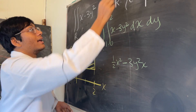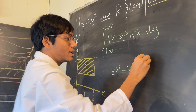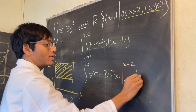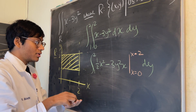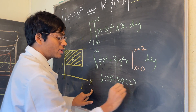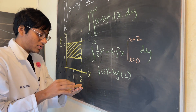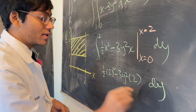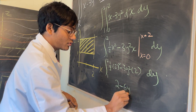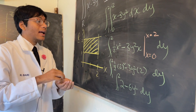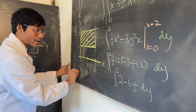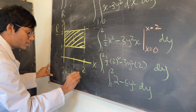Evaluate from x equals 0 to x equals 2. Plugging in x equals 2: we get half of 2 squared minus 3y squared times 2, which is 2 minus 6y squared. Plugging in x equals 0 gives zero, so we don't need to worry about it. We're left with the outer integral from y equals 1 to 2 of 2 minus 6y squared dy. Integrating: 2y minus a third of 6y cubed, which simplifies to 2y minus 2y cubed, evaluated from y equals 1 to 2.